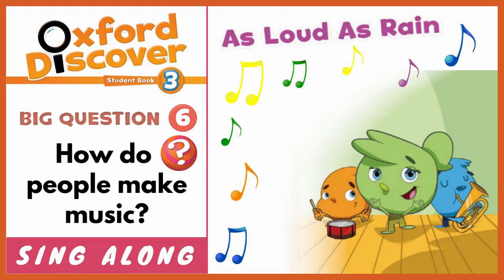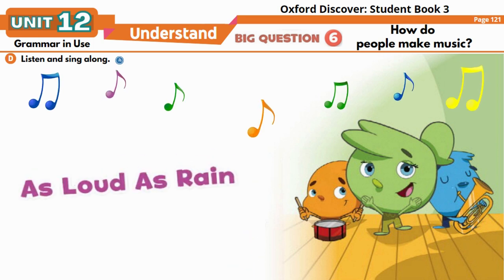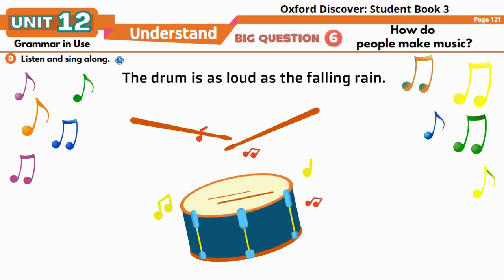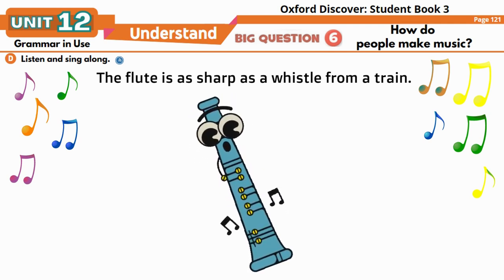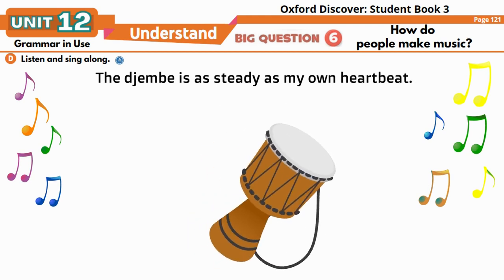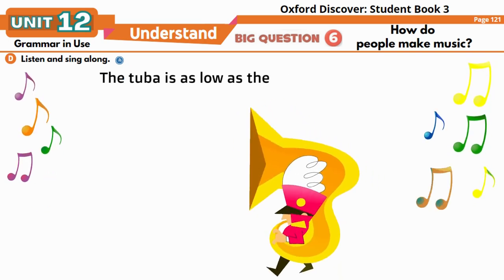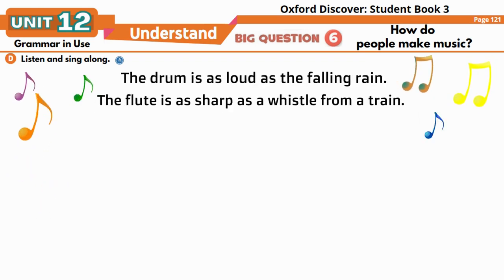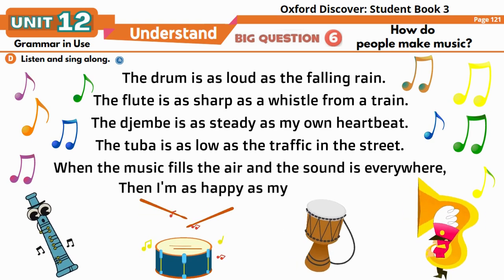Page 121, Grammar in Use D: Listen and sing along — 'As Loud as Rain.' The drum is as loud as the falling rain. The flute is as sharp as a whistle from a train. The djembe is as steady as my own heartbeat. The tuba is as low as the traffic in the street. When the music fills the air and the sound is everywhere, then I'm as happy as my dancing feet.